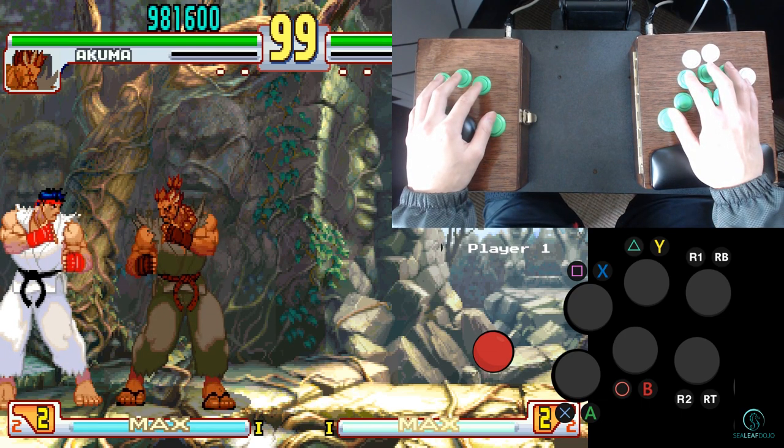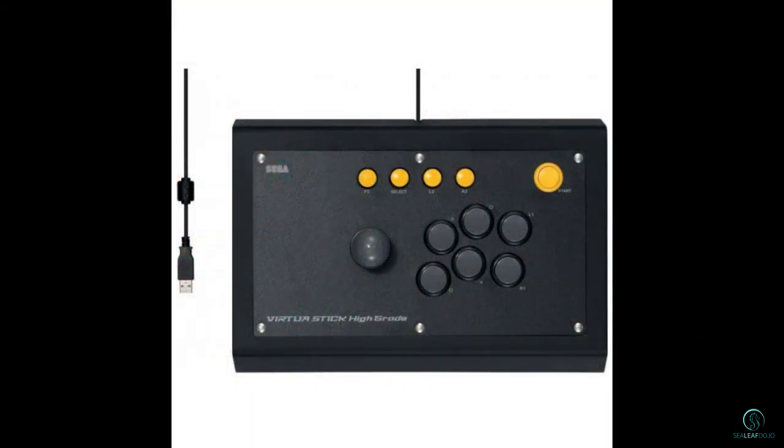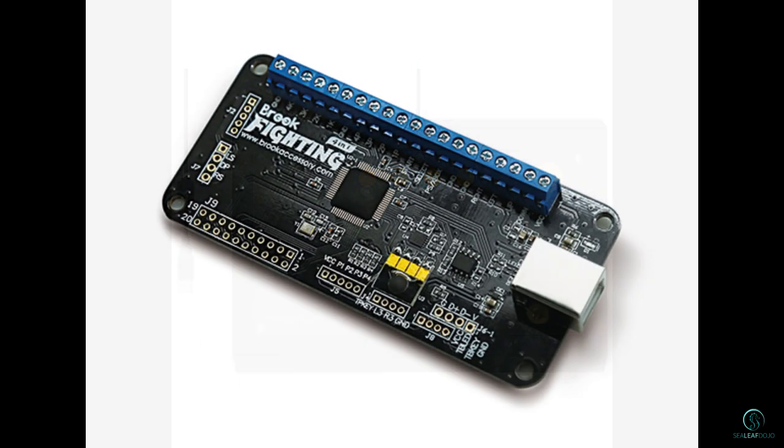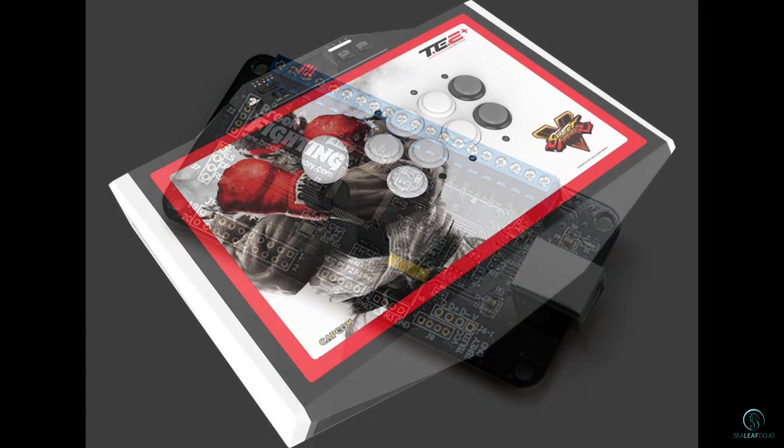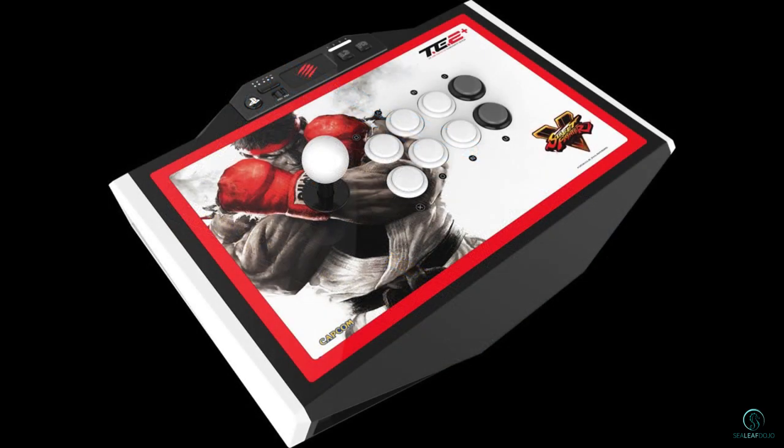Now before going into details, there are generally two basic ways of building this prototype. The first way is to build it off an existing controller such as an arcade stick. The second way is to build one based on a third party controller board such as a Brooks or PS360+. In this video, I will go over how to make one based on an existing arcade stick.